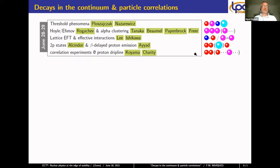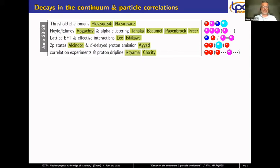In the discussions, one raised point was: we do see exotic structures — diproton, cigar, triangular, or linear chains in carbon. These structures originate from interactions; we then observe the decay of these states with certain dynamics — sequential or direct — for the Hoyle state and others. The question is whether these decay dynamics are connected to the exoticity of the structures or governed by the interactions in the decay channel, something discussed yesterday and hopefully today.